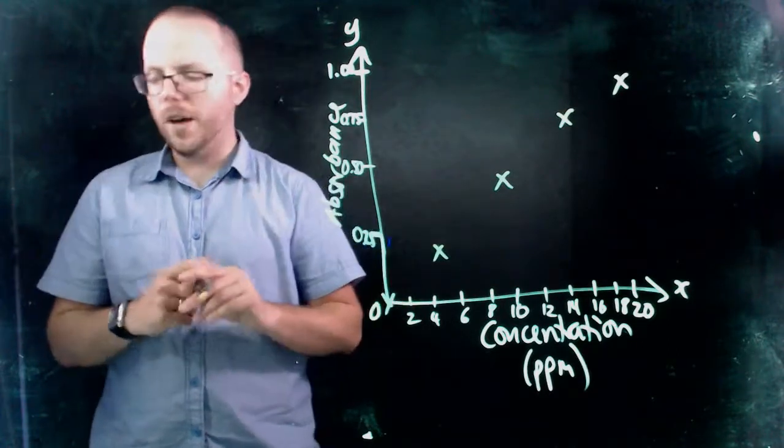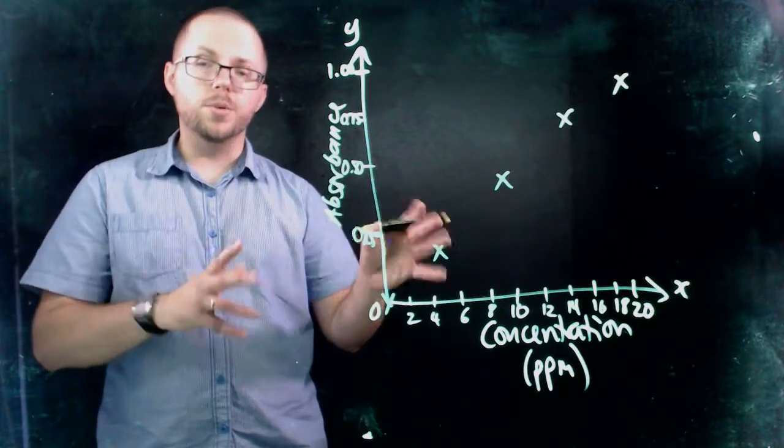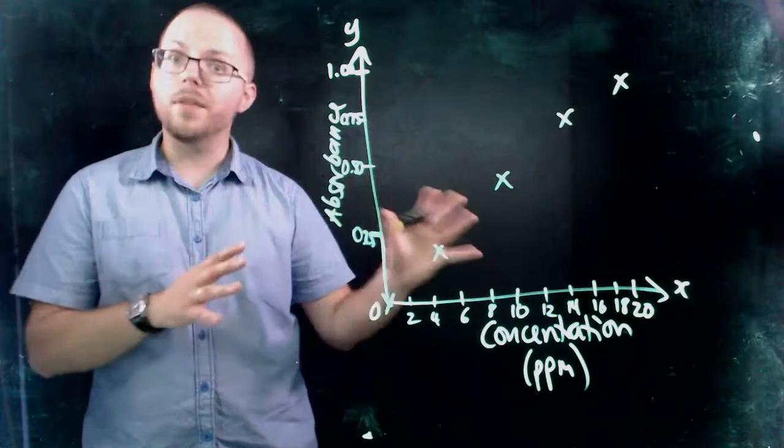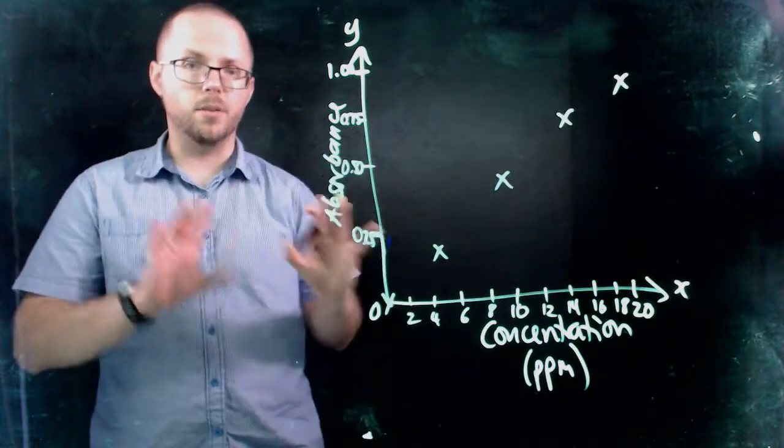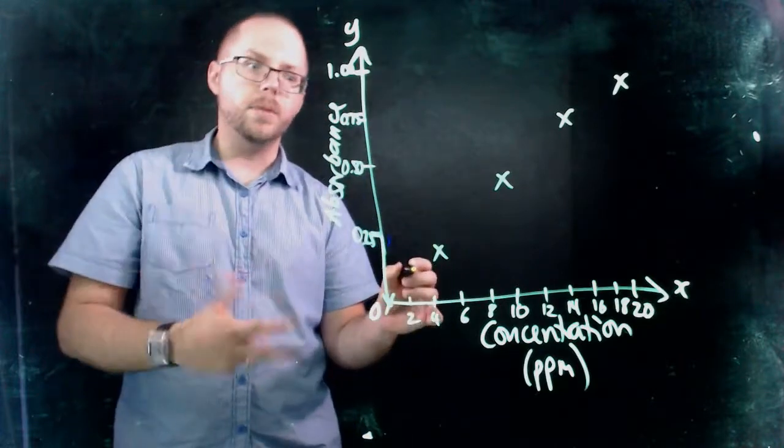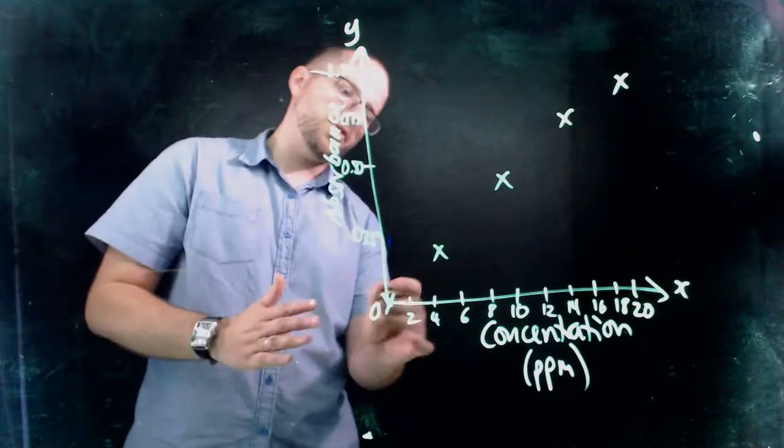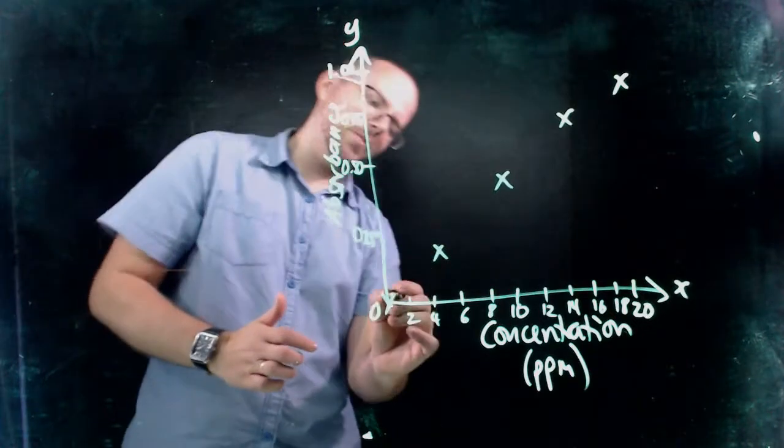And so then what we're going to do is to do our final step of constructing our calibration line. I'm going to use a ruler to do a straight line of best fit. Now, I don't have the luxury of a ruler to be able to work this out, so I'm going to freehand it as best I can. But in an actual, when you're doing this properly, you'd either get the computer to do it, or you would use a ruler and make sure that the ruler goes evenly between all of your points.